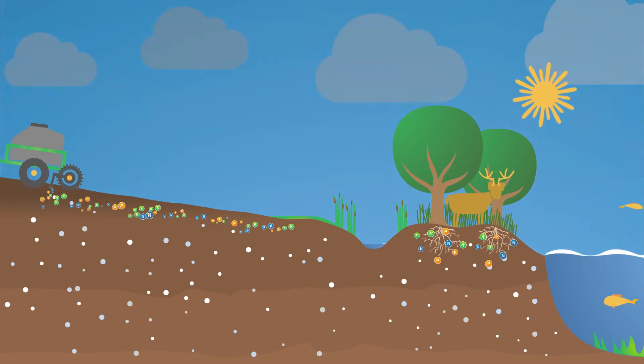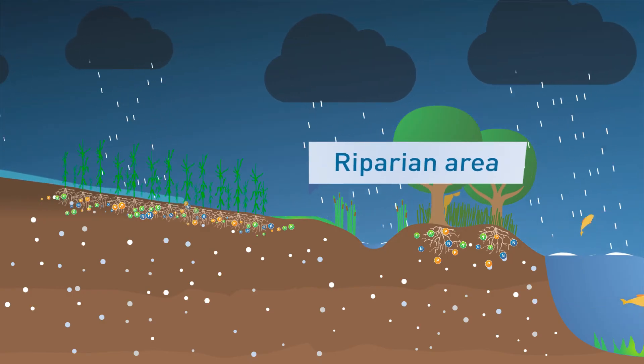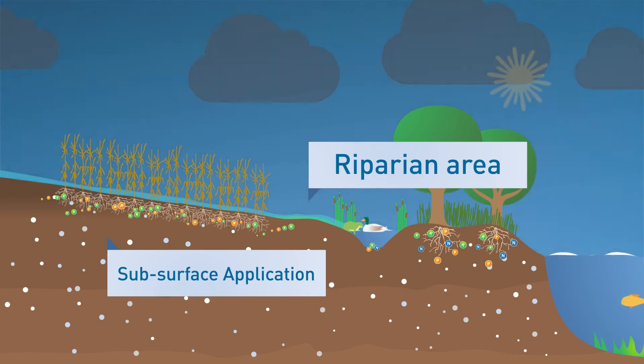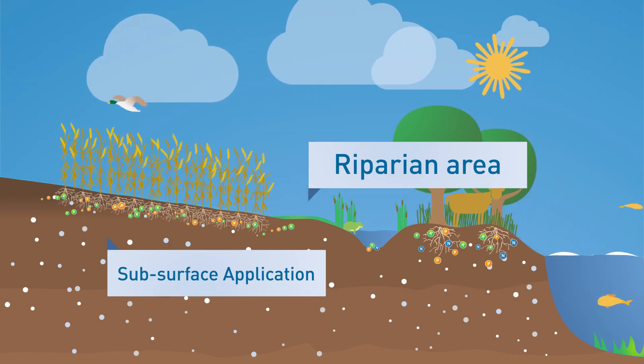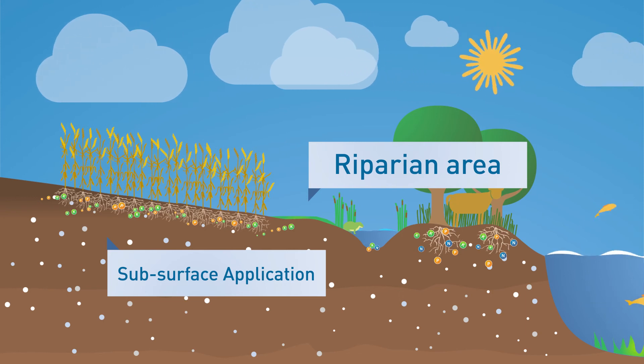That's why best management practices like the creation of riparian areas and the use of the 4R nutrient stewardship system are so important. They can improve crop yields, increase soil quality, increase farm profits, and protect habitats.